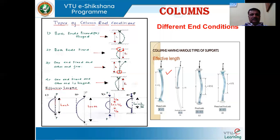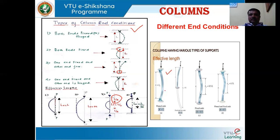The effective lengths for different conditions are: in the first case, effective length equals the actual length L. In the second case, effective length equals twice the actual length, 2L. In the third case, effective length is half the actual length, L/2, where only the middle portion is subjected to buckling. In the fourth case, one end fixed and other end hinged, the effective length is L divided by the square root of 2.